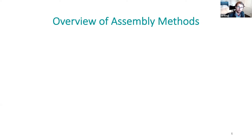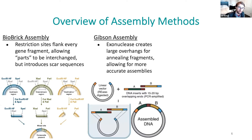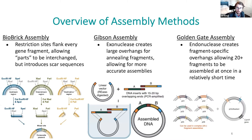As far as the overview of assemblies: we have BioBrick assembly, which uses restriction sites — basically the ancient way of doing assembly. There's also Gibson assembly, which we're going to talk about today. It uses an exonuclease to create large overhangs and works on homology to get your assembly done. Another method is Golden Gate, which we're not going to cover today, but it uses some similar concepts.